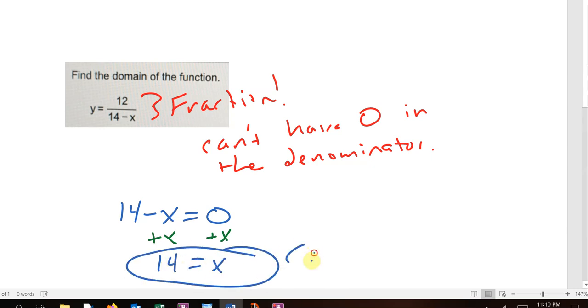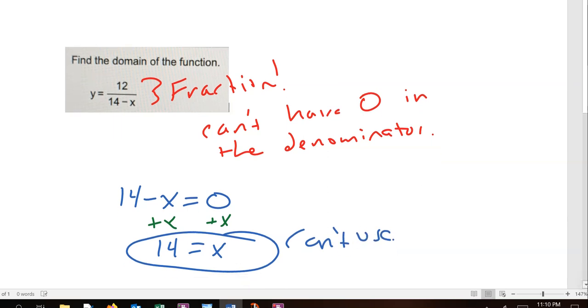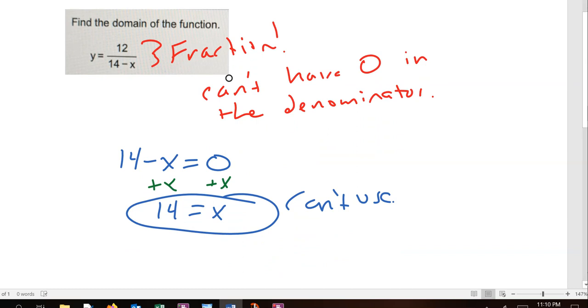We can't use this number, and it's the only number we can't use. So that means the domain is everything except for 14. The domain is all real numbers except x equals 14.